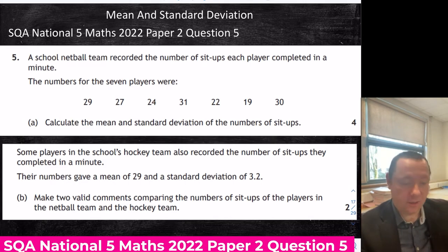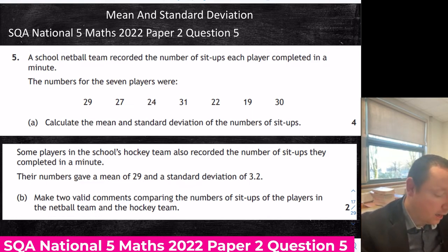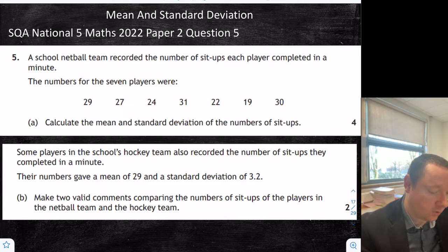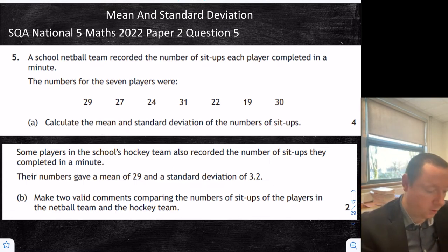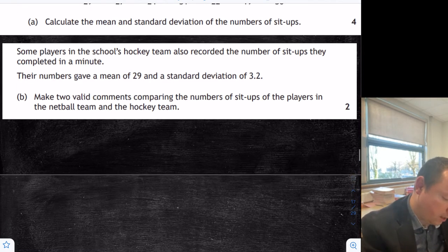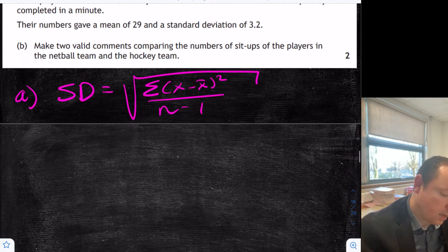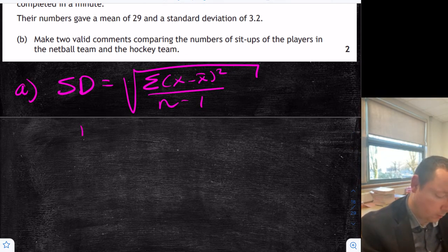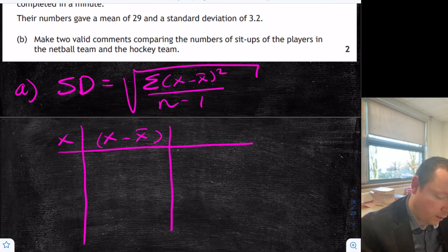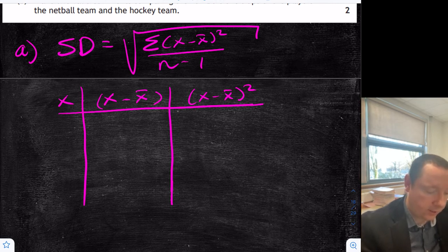Mean and standard deviation — SQA National 5 Maths 2022 Paper 2 Question 5. A school netball team recorded the number of sit-ups each player completed in a minute. The numbers for the 7 players were given. Calculate the mean and standard deviation. Recall from the front of the exam paper: the standard deviation is the square root of the sum of x minus x-bar squared all over n minus 1. I'll draw my table: x, x minus x-bar, and x minus x-bar squared.